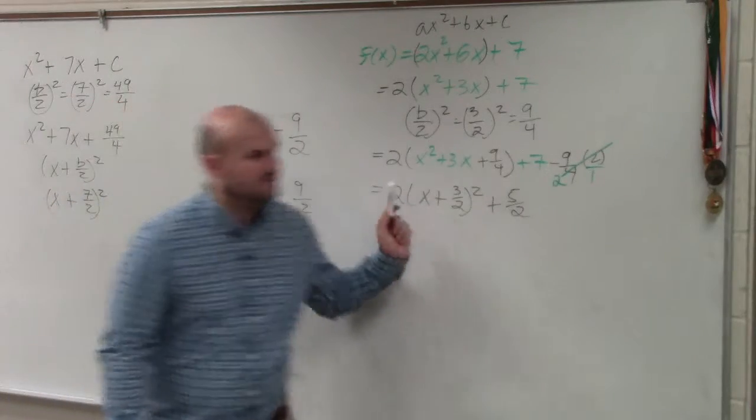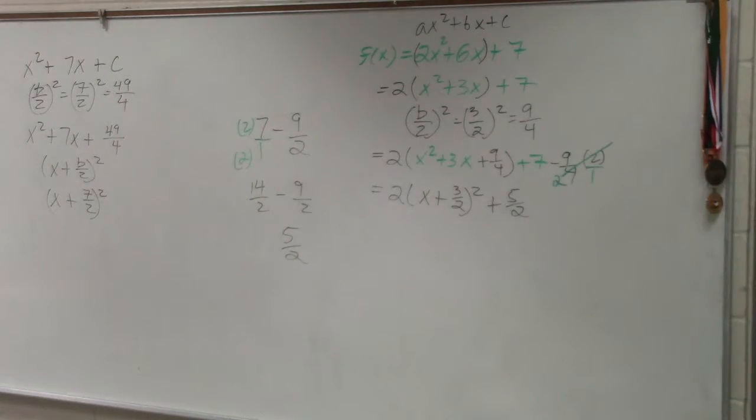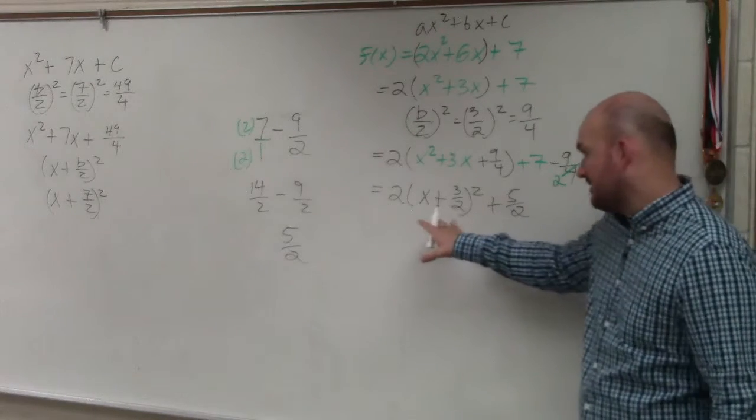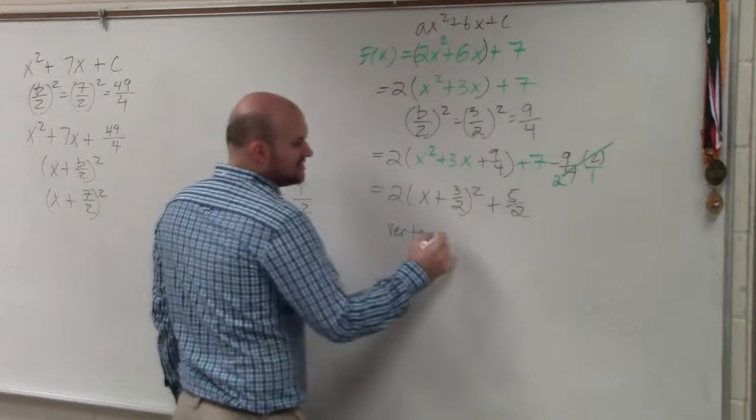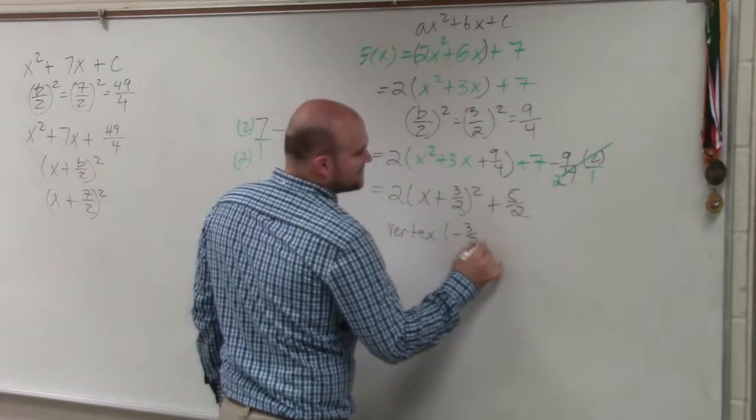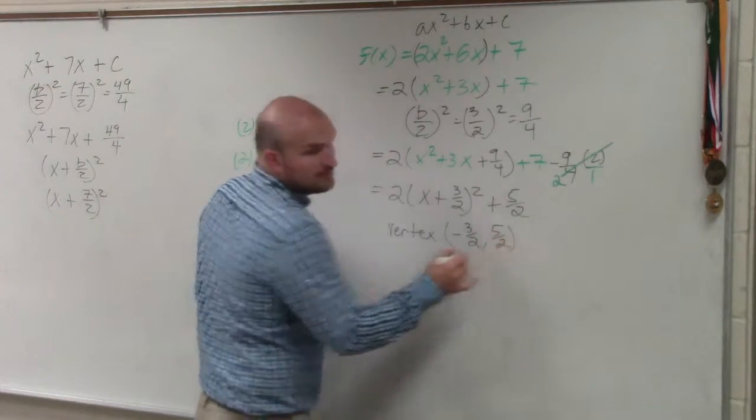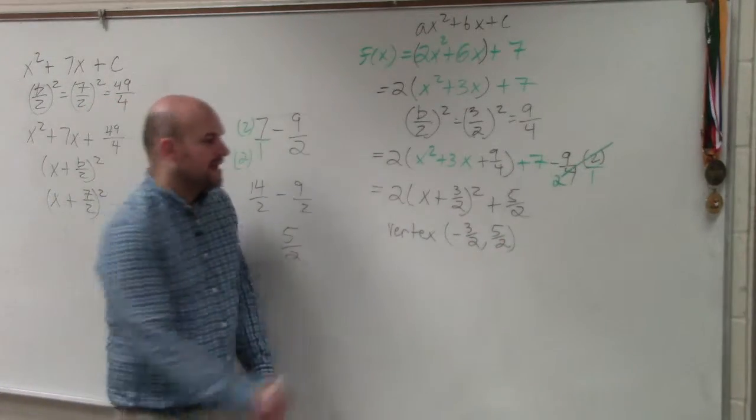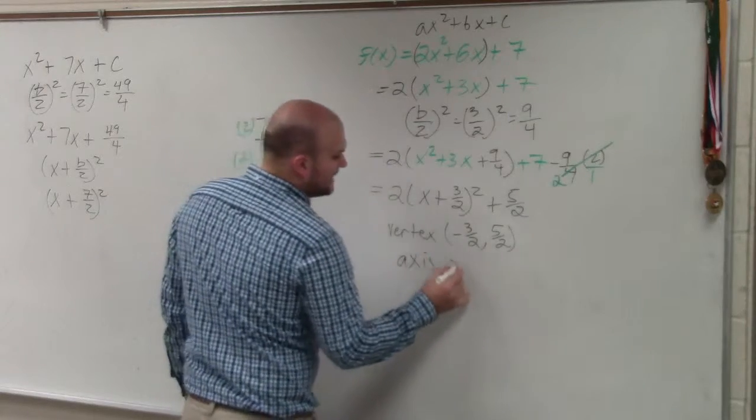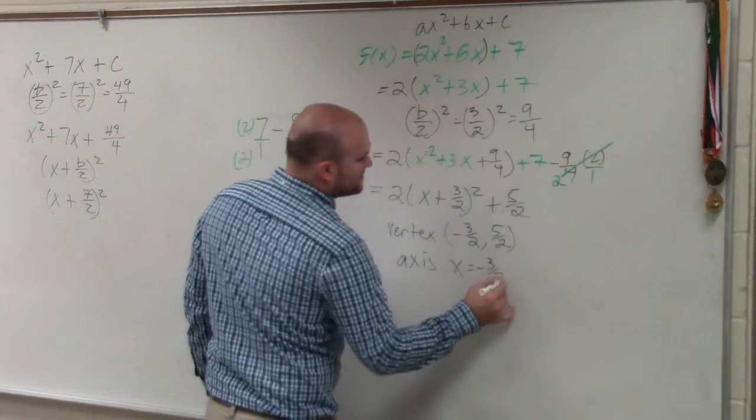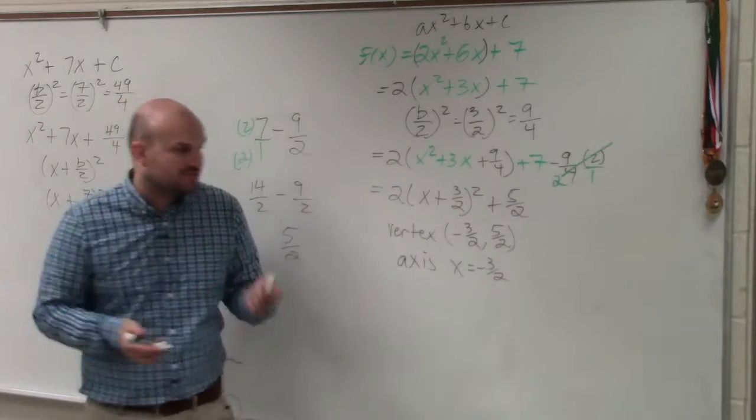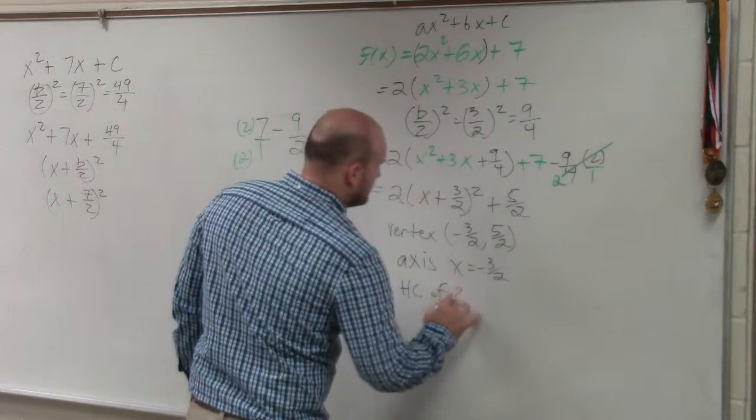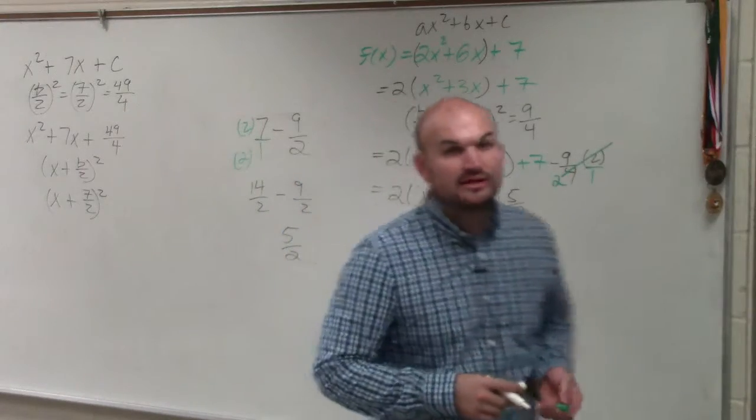So therefore, we can identify what else do they ask on this. Use complete the square to describe the graph of each function. Support your answer graphically. So we would just use a graphic calculator to make sure. But my vertex is going to be at negative 3 halves comma 5 halves. My axis of symmetry is going to be x equals negative 3 halves. And I would also have a horizontal compression of 2. And that's basically what I describe.